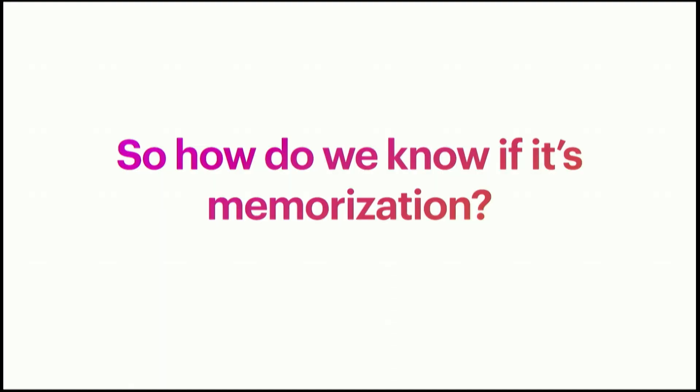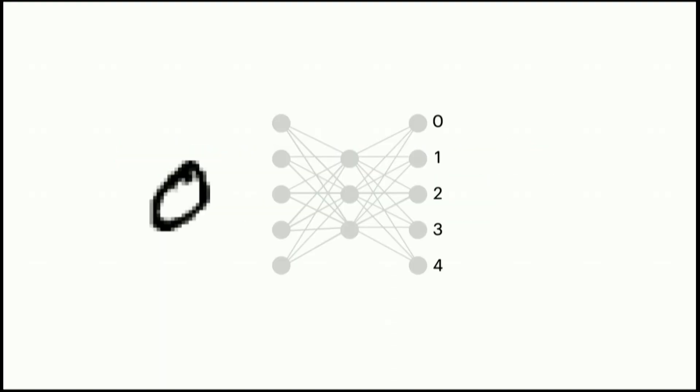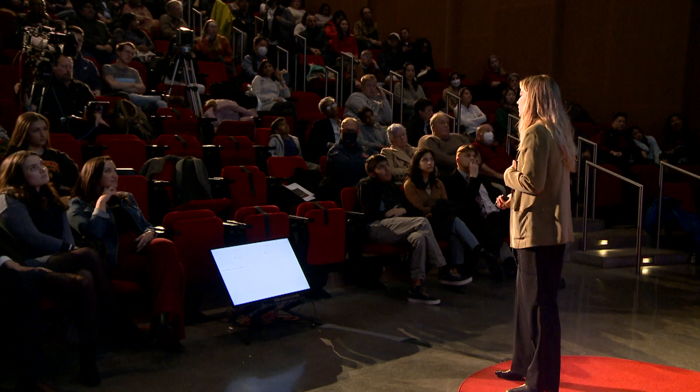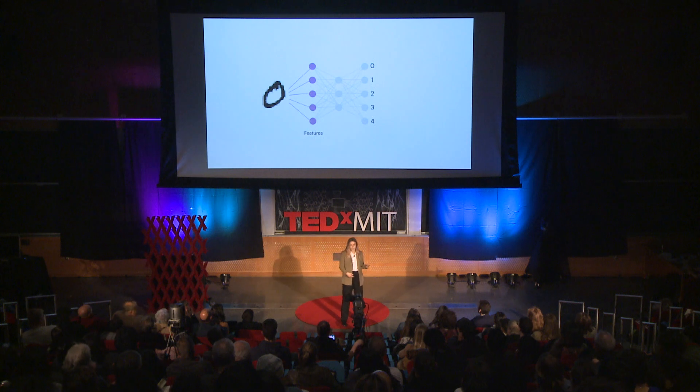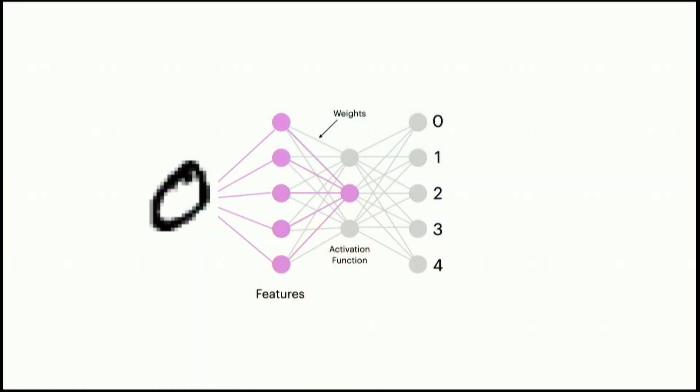So how do we know if it's just memorization? Let's talk about how models learn to figure that out. There's an input, such as an image, which is broken into individual features like pixels. Each hidden layer takes input from the prior layer, learns a weight to say how important this feature is, and then uses an activation function to decide what the bar is for that neuron to fire.